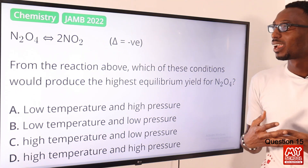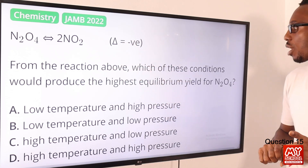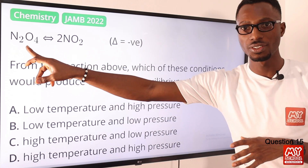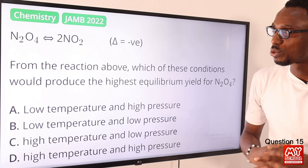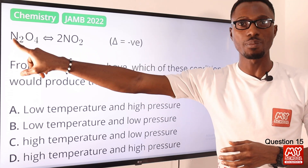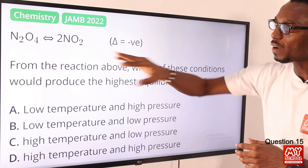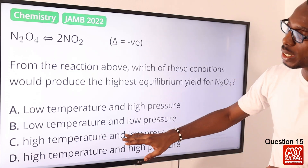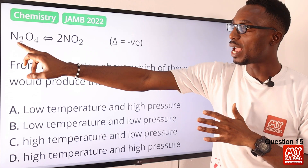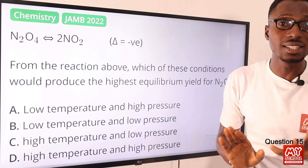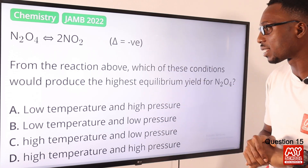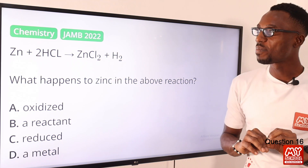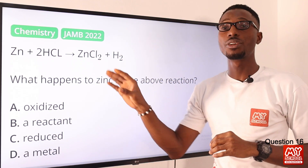Question fifteen: from the reaction shown, which conditions would produce the highest equilibrium yield? This is a reversible reaction. If you are looking for the highest yield going to the right, you need to decrease temperature and increase pressure. The question asks what favors a good yield, which would be a decrease in temperature and an increase in pressure. That compilation is presented in option A. Option A is the right option.